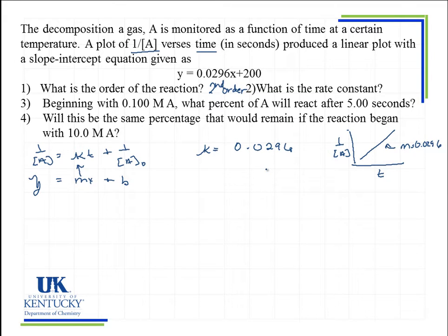Slope is change in Y over change in X. So the units of Y are 1 over molarity, a concentration unit. The units for X was in seconds, so this gives me 1 over molarity times seconds for the slope, for the rate constant K, and that's always the units for second order reaction.